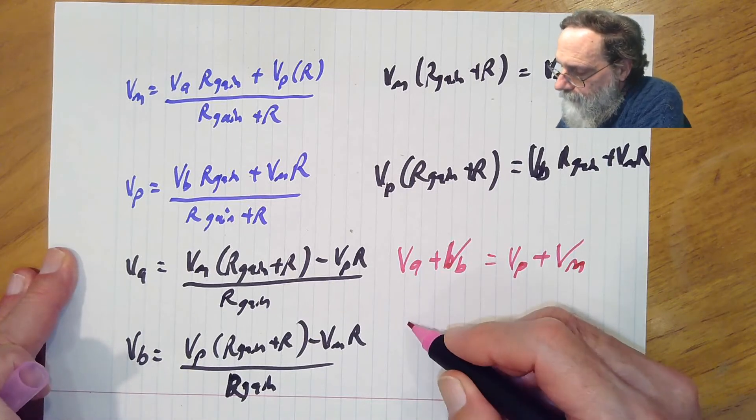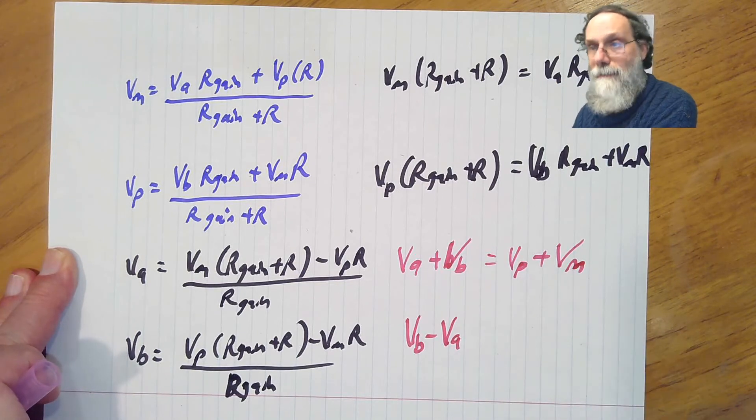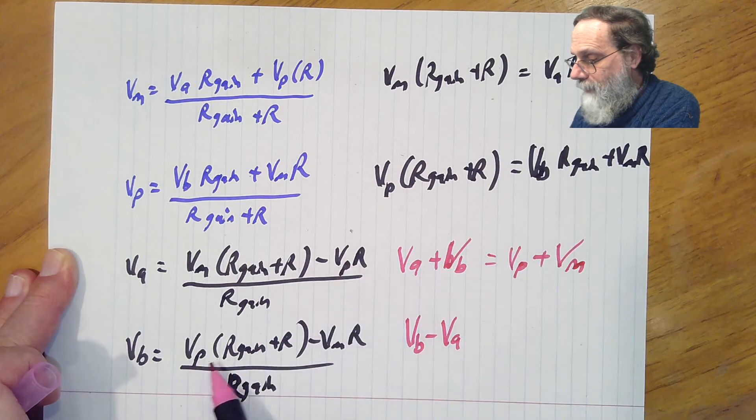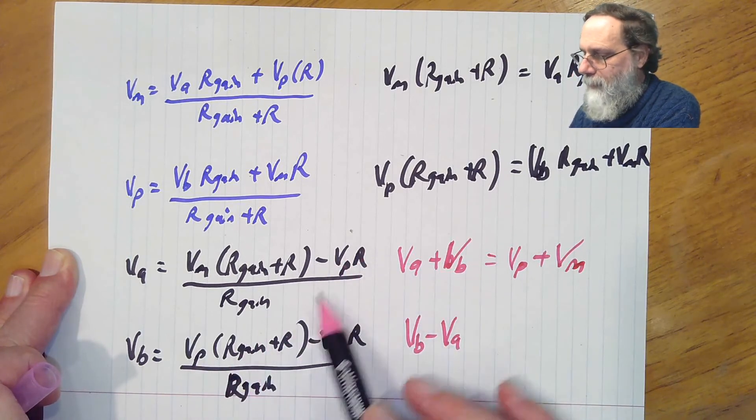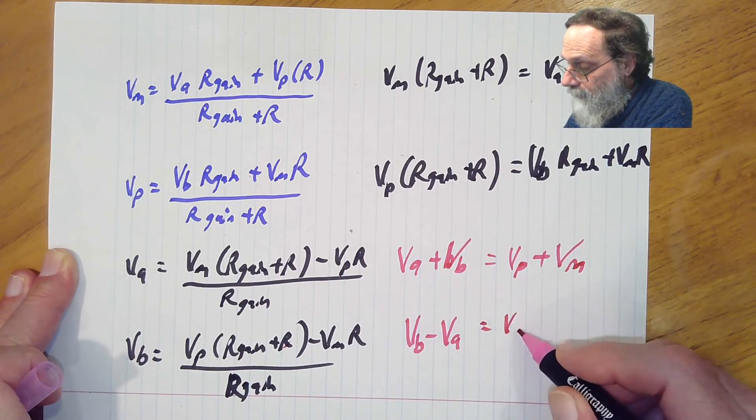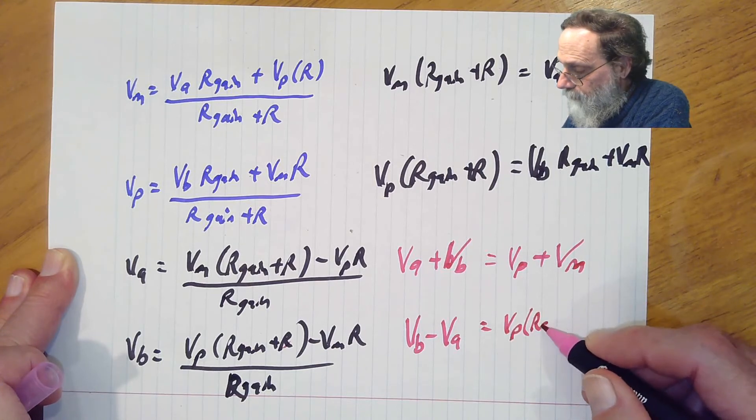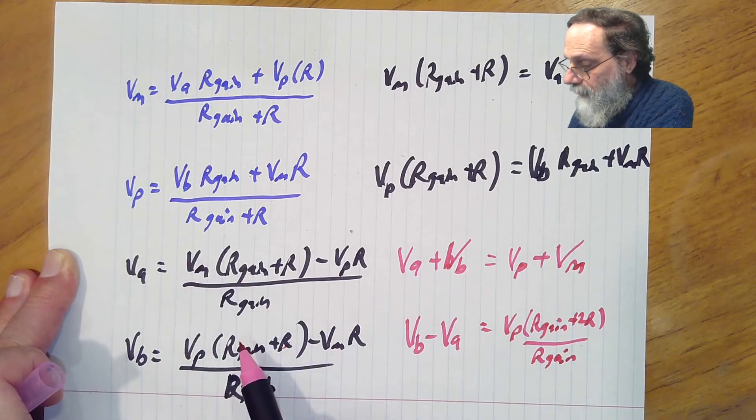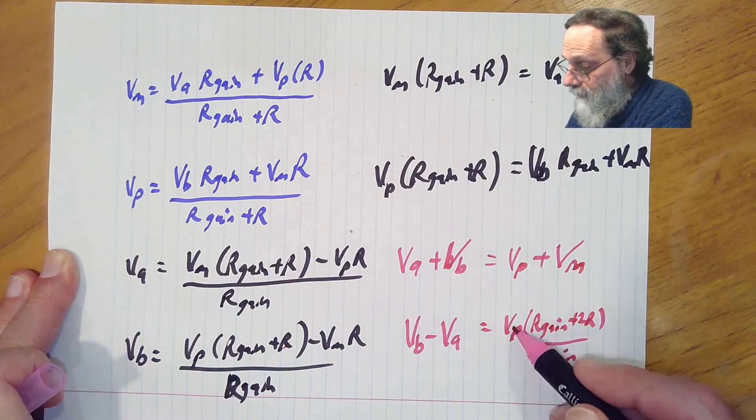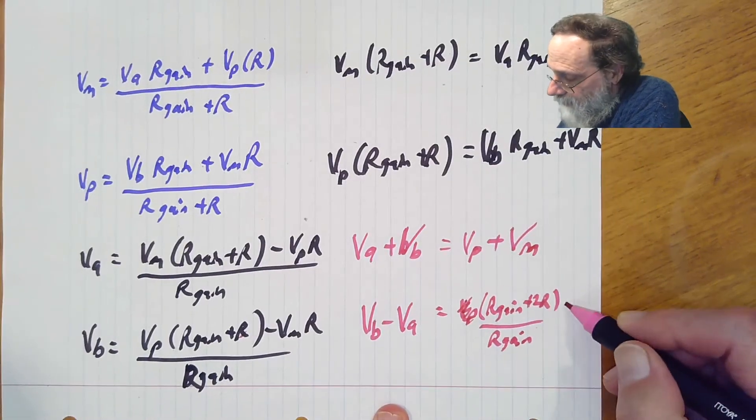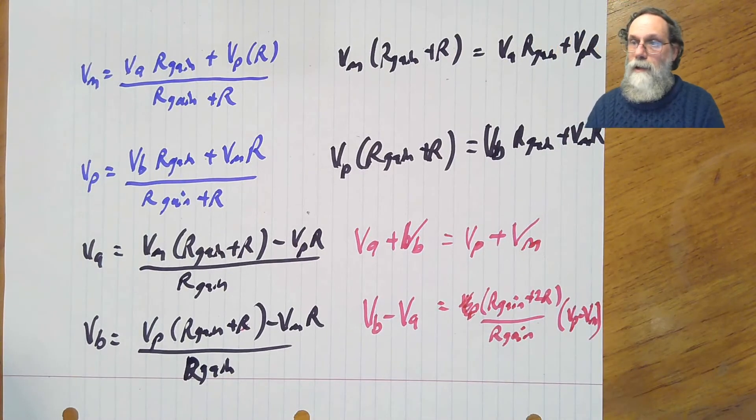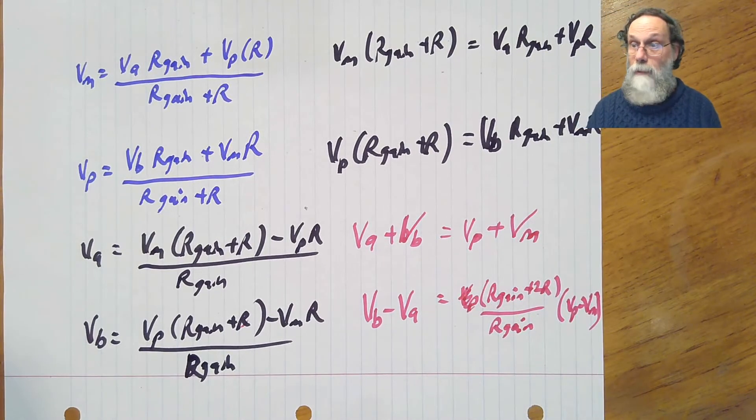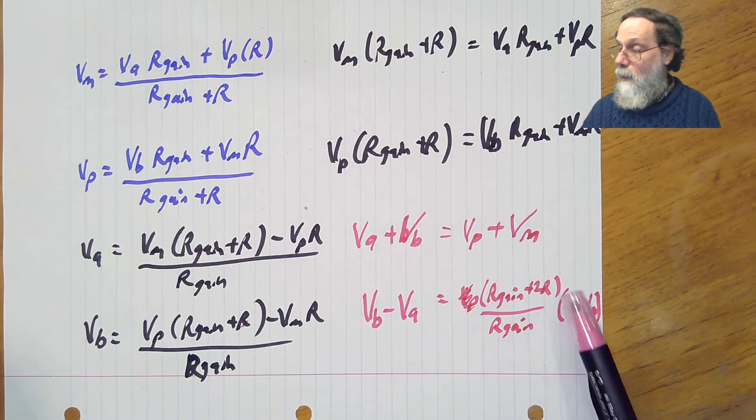Let's look at Vb minus Va, the differential signal that's the meaningful part, the information bearing part of the output. So here when we try and do the Vp, Vp doesn't cancel anymore. Vp R and Vp R here, they add now. So we're going to get Vp times R gain plus 2R over R gain. And we look at what happens with the Vm, it's going to be doing the same thing. So it's going to also have R gain plus 2R over R gain. So let's just write this as Vp minus Vm. So our differential input signal gets converted to our differential output signal, but there's a multiplier here. There's a gain term.